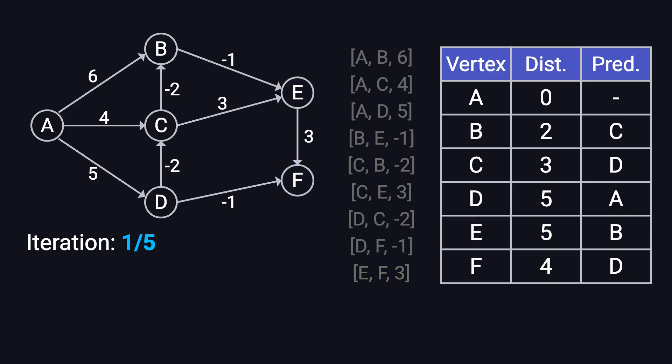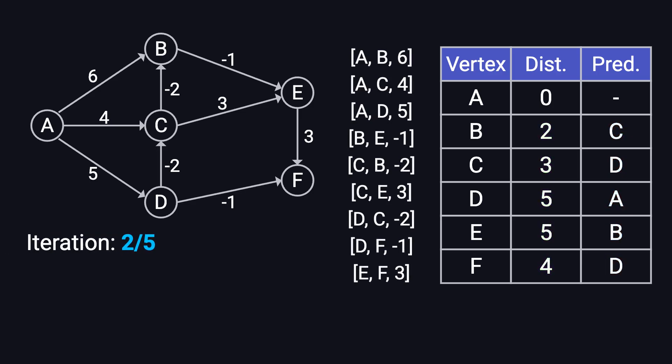At the end of the first iteration, the shortest distances from A to B, C, D, E, and F are now two, three, five, five, and four, respectively, with predecessors updated accordingly. In the second iteration of relaxation, we go through all the edges again, checking if any shorter paths can be found. By the end of this iteration, some shortest distances update further — such as A to B and A to E, which reduce to one. However, no predecessor updates occur in this iteration.